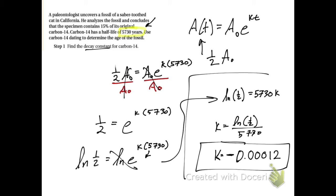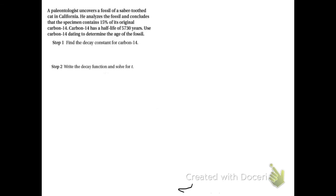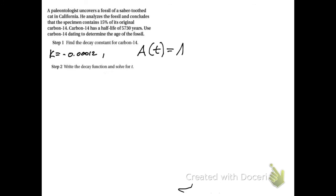With the decay constant k ≈ −0.00012, we can write the decay equation as A(t) = A₀ · e^(−0.00012t). Now we can solve for t since the fossil contains 15% of the original carbon-14. Setting our starting amount as 1 and the remaining amount as 0.15: 0.15 = 1 · e^(−0.00012t).